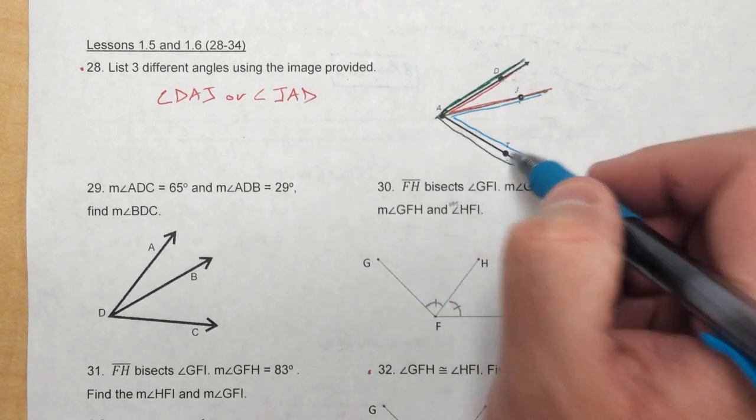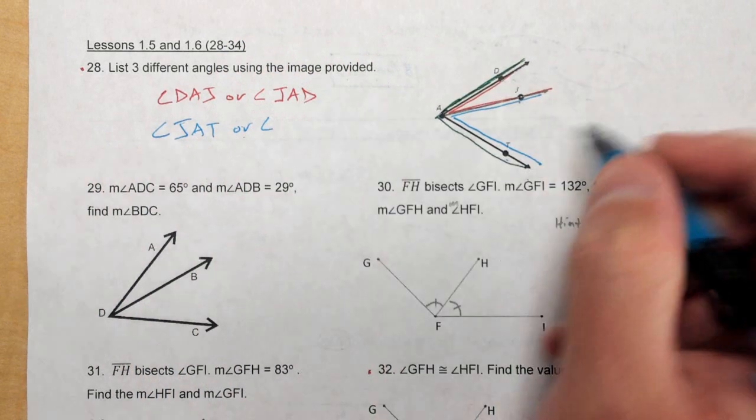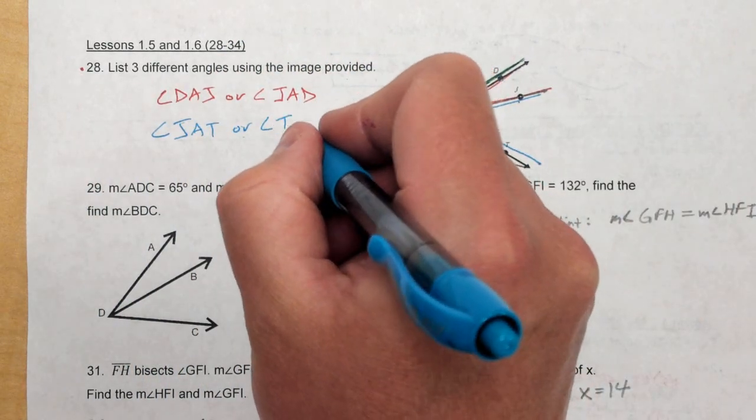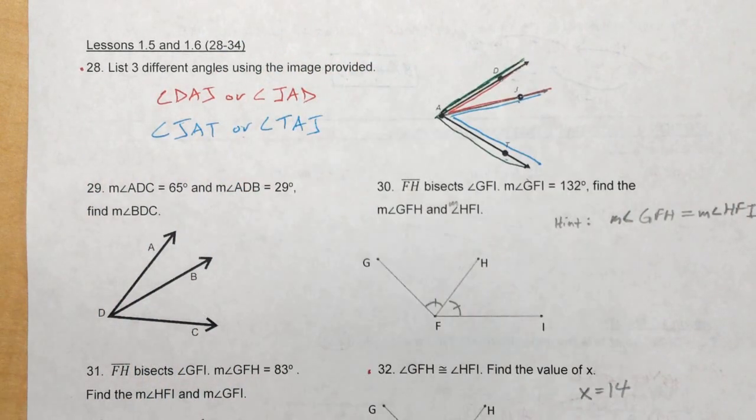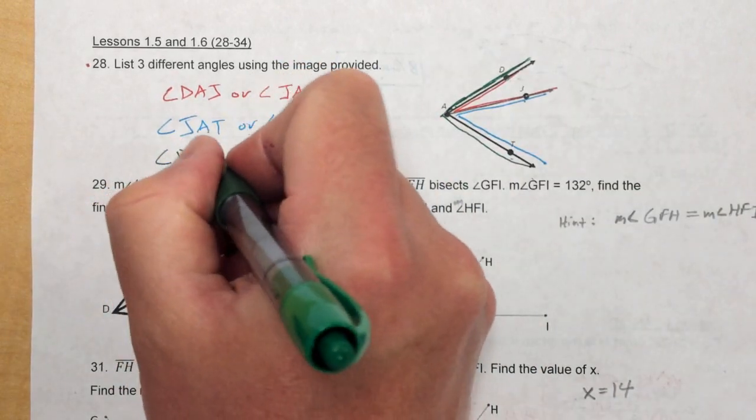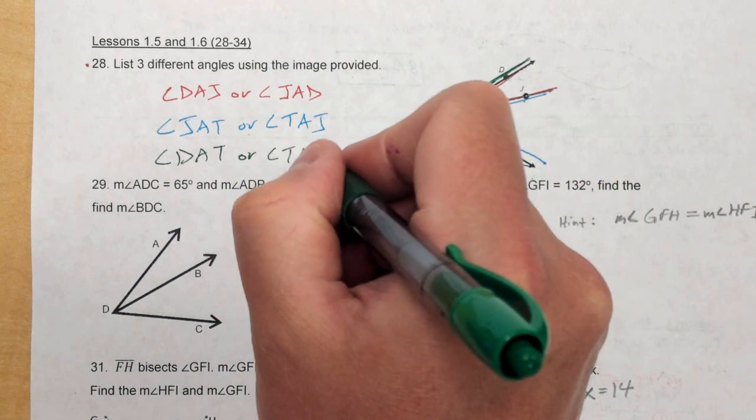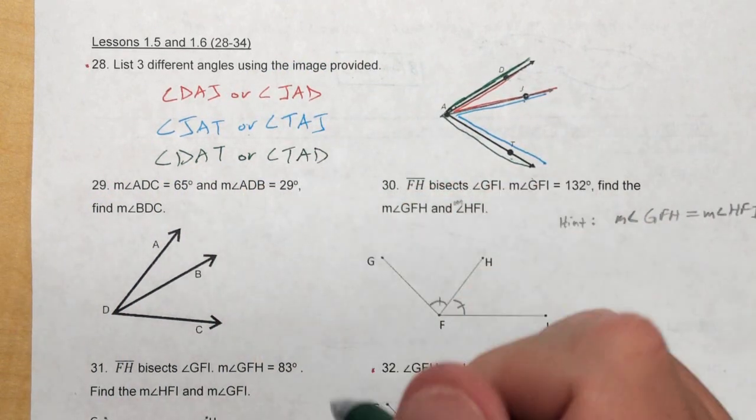The blue one I could call angle JAT. Or you could call it angle TAJ. So I can just switch those letters around. And then the green one I could call angle DAT. Or I can call it angle TAD. Again, just flip those letters around.